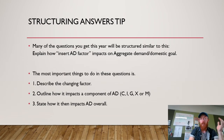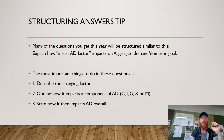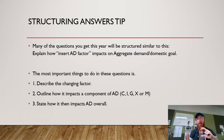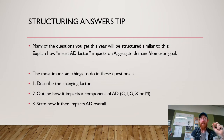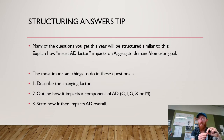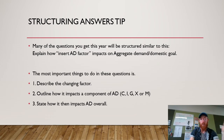Some tips for structuring your answers in SACs: many questions will be structured as 'explain how [an aggregate demand factor] impacts on aggregate demand or a domestic macroeconomic goal.' The most important things to do are to describe the factor that is changing, outline how it impacts a component of aggregate demand and whether it increases or decreases it and why, and then state how it impacts aggregate demand overall.